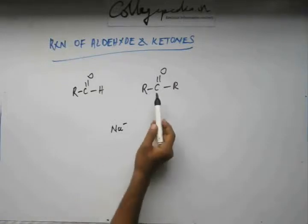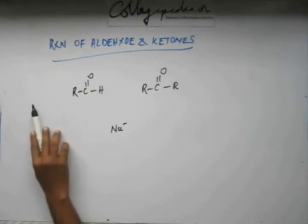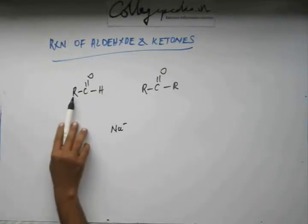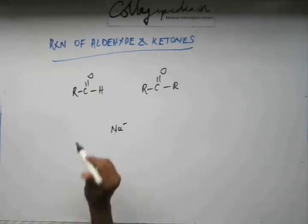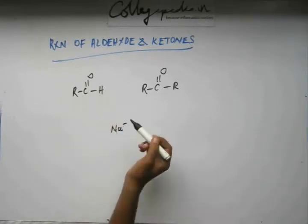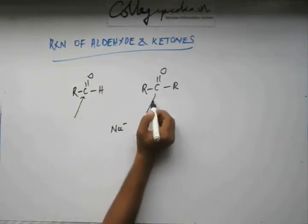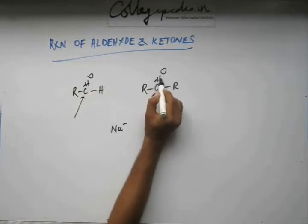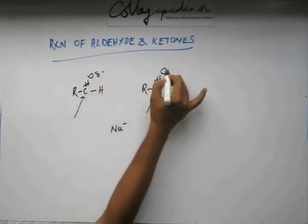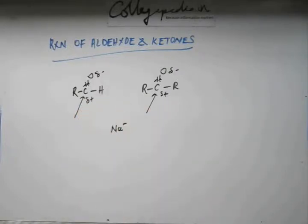Both aldehyde and ketone have a C=O group. The R part has C–C or C=O bonds between carbons, so mostly the R part will be non-polar and will not be the reactive site. The reactive site will be the C=O because this carbon is electron deficient. Due to electronegativity, oxygen pulls electrons, becoming δ– while this carbon has a δ+ charge in both aldehyde and ketone.